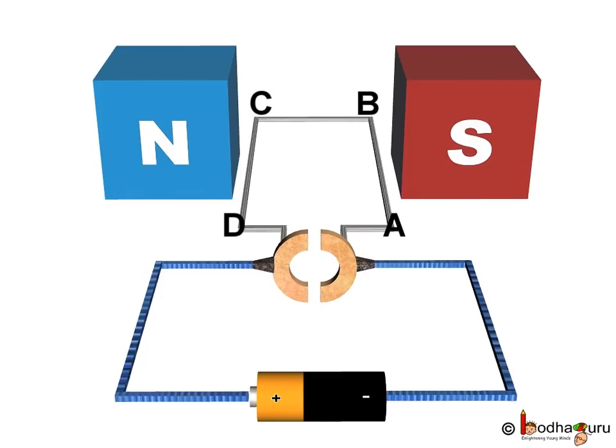And what is the effect of the reversal of current in the rectangular coil ABCD? Well, this reverses the direction of force acting on the two arms AB and CD. Thus, the arm AB of the coil that was earlier pushed down is now pushed up and the arm CD which was previously pushed up is now pushed down. Therefore, the coil and the axle rotate half a turn more in the same anti-clockwise direction.